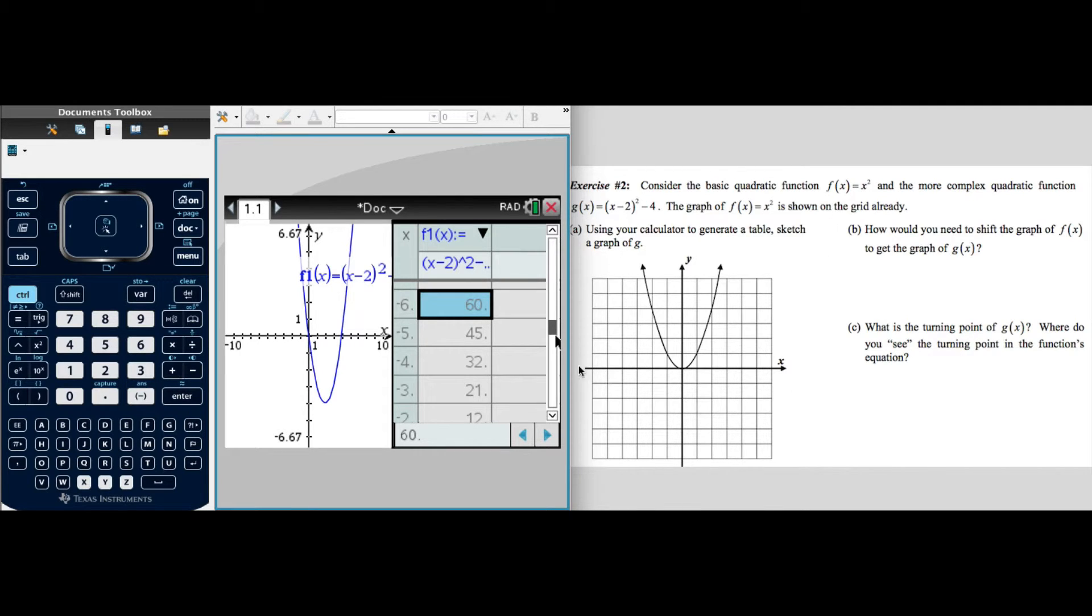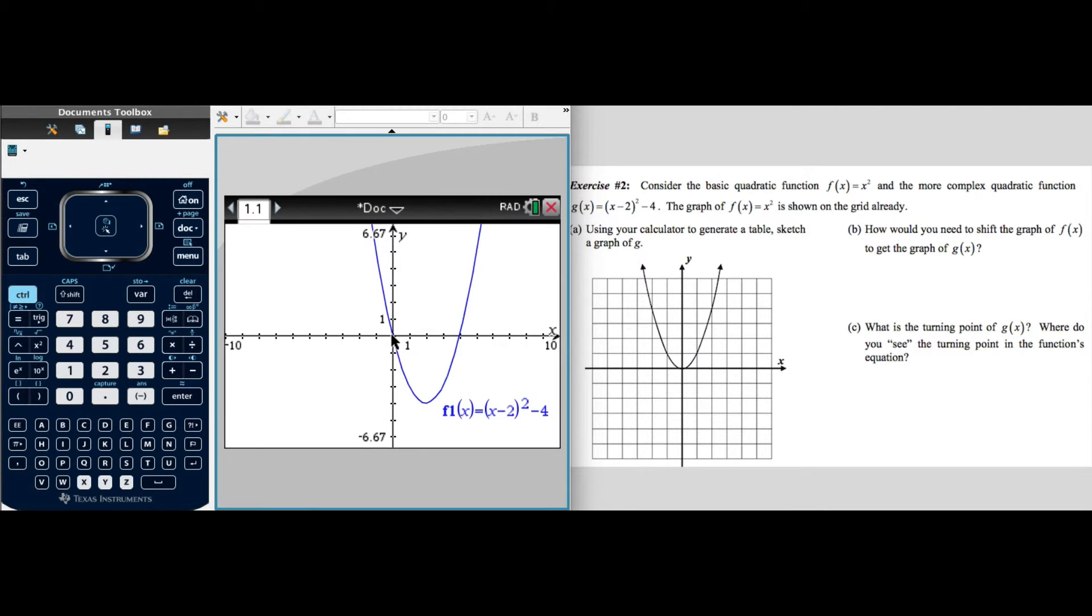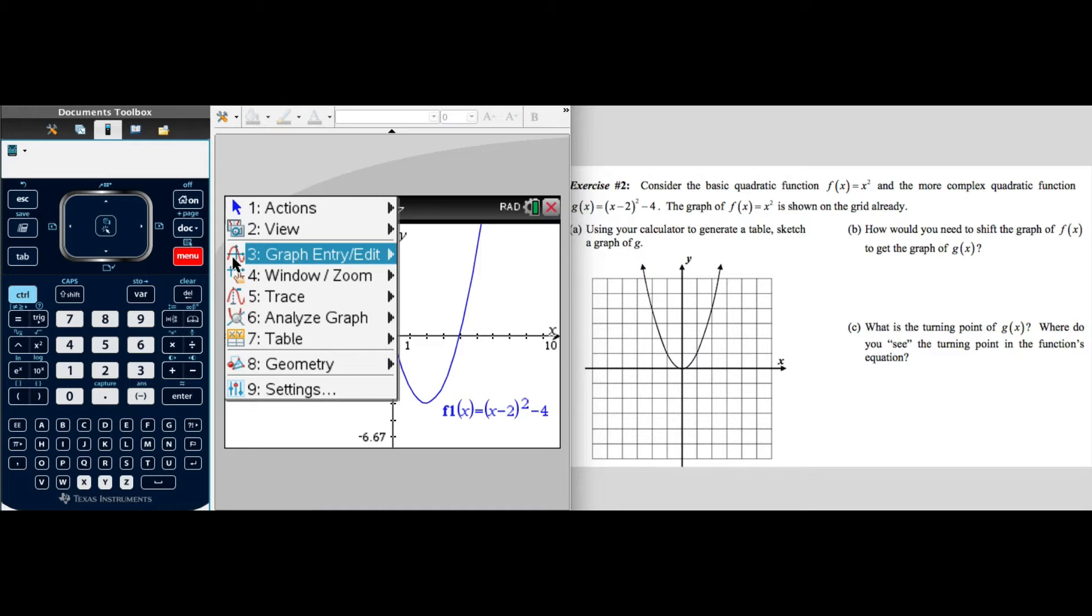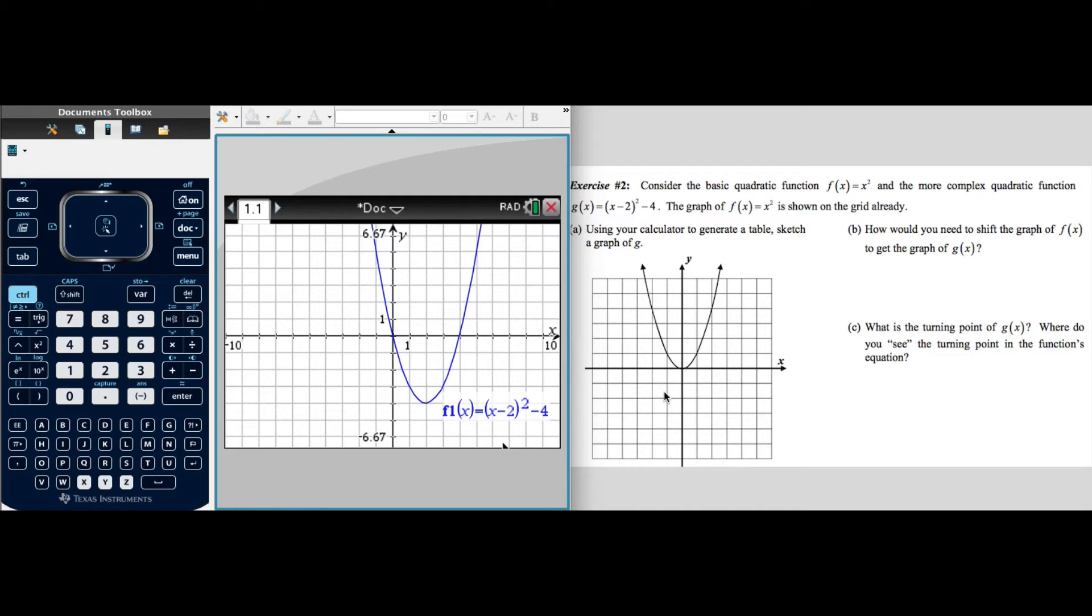And then we can graph these values on our chart. Let's go to B. How would you need to shift the graph of f(x) to get to the graph of g(x)? Well, I'm going to now kind of undistort this. And we're going to hide that table. So we're going to go to menu. And, of course, we use those values, right? Those ordered pairs to create our graph. And what would we have to do? Well, let's go and make a grid here to maybe make this a little bit easier to discern. Grid and line grid. And there we go.